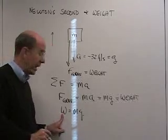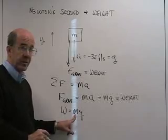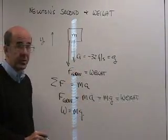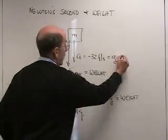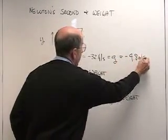There's a direct proportionality between the weight, the force of gravity, and the mass of the object on Earth. That proportionality constant is just 32 feet per second squared or alternately minus 9.8 meters per second squared.